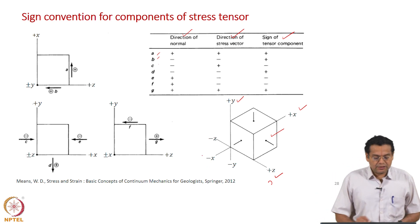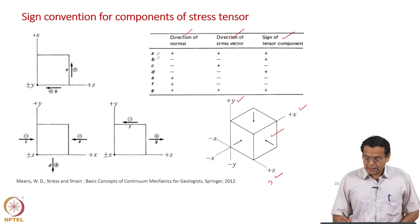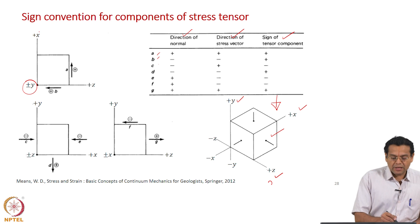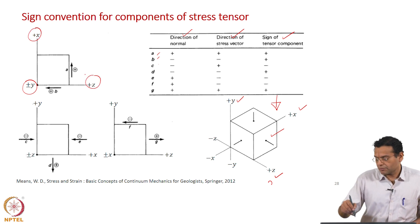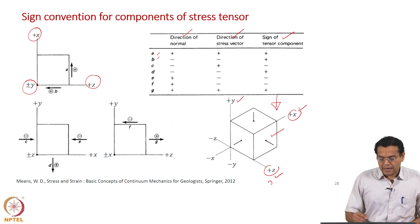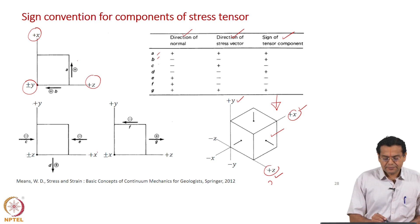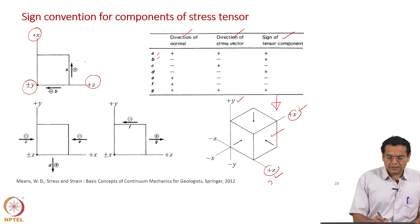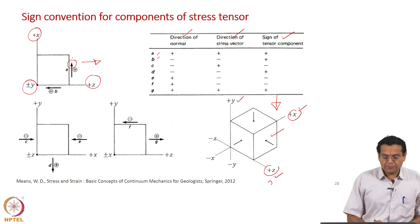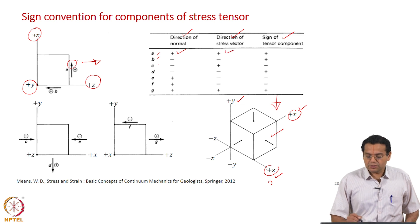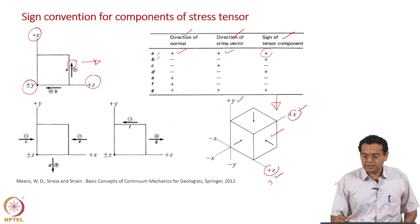Let us take case A. Looking from the top, you have plus-minus y, then x-axis and z-axis here. Considering this face, the normal to this face is along the positive z-axis. If the component is along the positive x-axis, the normal to the plane is positive and the direction of the force is also positive. Hence the corresponding sign of the tensor component is also positive.